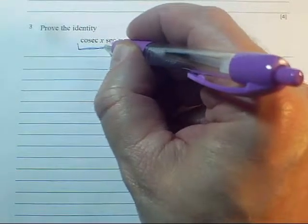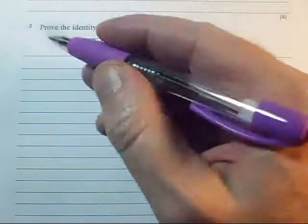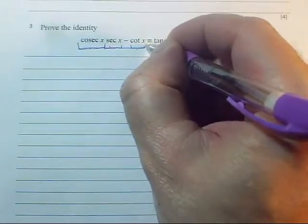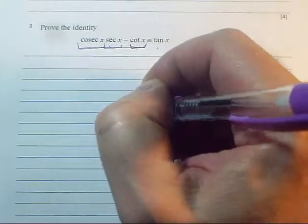So just use the definition of cosec x. It's one over something, one over whatever, times one over something else. And this will be a fraction. This will be a trig function over another trig function.